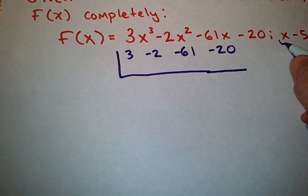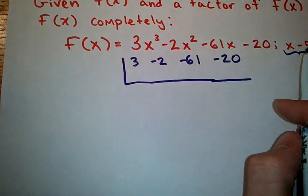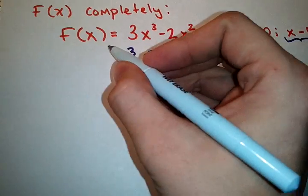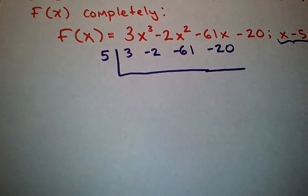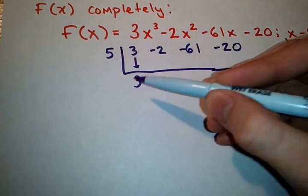And we're dividing by the factor x minus 5. Now, on the outside of this bar, we want the solution to x minus 5. So we're going to take the opposite sign. On the columns, we add. So the 3 comes down.